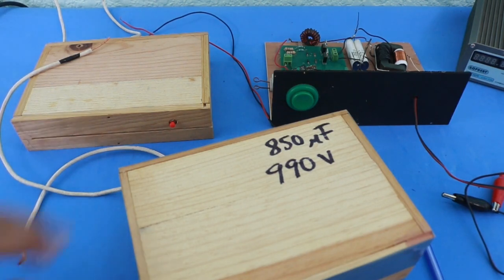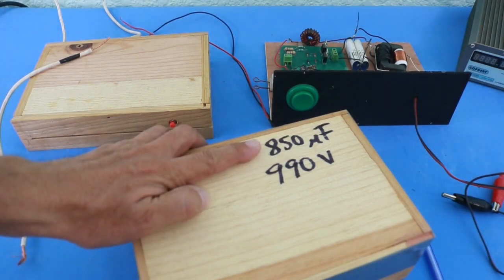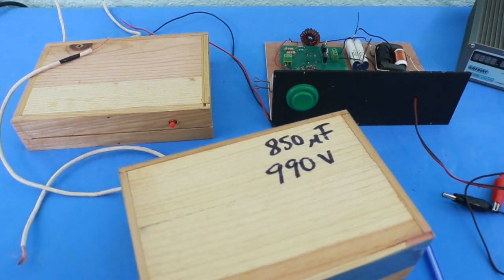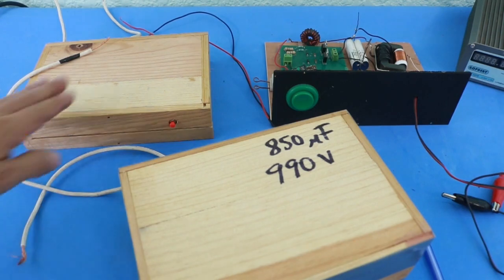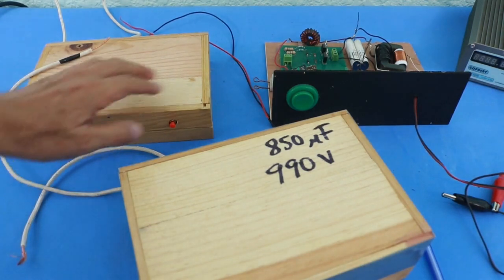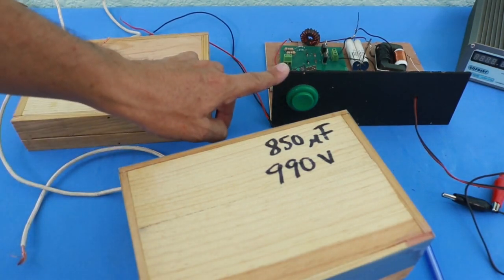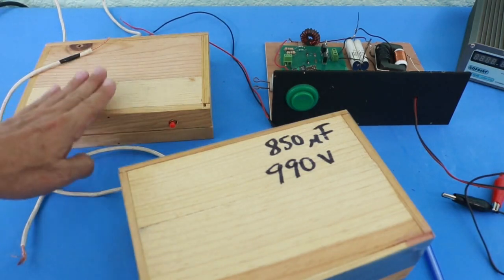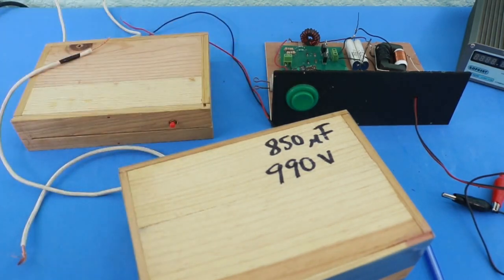We have our capacitor bank, 850 microfarads at 990 volts, the spark gap switch, and high voltage capacitor charger. Each of these modules I have made videos in the past. You can see the links in the description of this video.